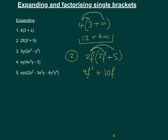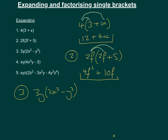Number 3 is 3y times (2x² - y²). Exactly the same method — the only difference is we now have two different variables x and y, but it doesn't affect the approach at all. So 3y times 2x² is 6x²y, and then minus 3y times y² is minus 3y³.